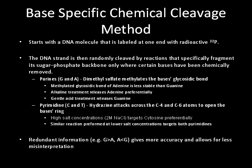The base-specific cleavage method was the method discovered by the Gilbert group. It starts with a DNA molecule that is labeled at one end with radioactive P32. The DNA strand is then randomly cleaved by reactions that specifically fragment its sugar-phosphate backbone only where certain bases have been chemically removed. Purines are methylated by dimethyl sulfate at the base's glycosidic bond. The methylated glycosidic bond of adenine is less stable than guanine. Using an alkaline treatment, this releases adenine preferentially. With a gentle acid treatment, guanine is released preferentially.